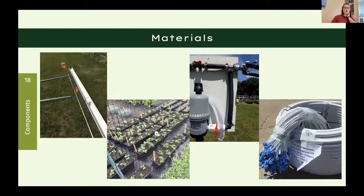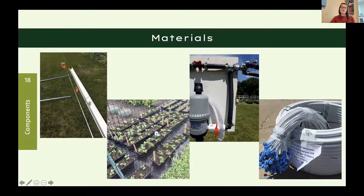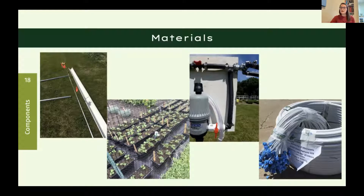Here you can see photos of our materials: on the far left is our Meteor system gutter; the second photo shows our plants in troughs in their soilless media; then a photo of the fertigation board; and a photo of our header lines with spaghetti tubes and emitters attached. You need full sun for your site, and either build on a gentle slope or include a quarter-inch drop between your supports.